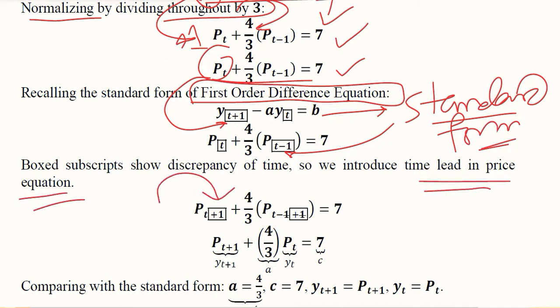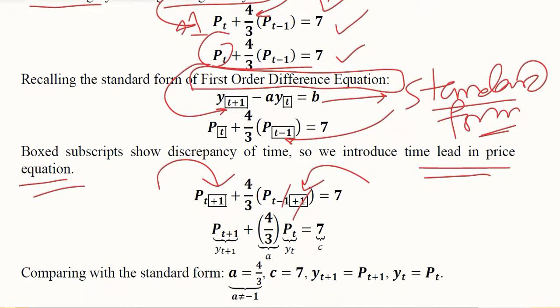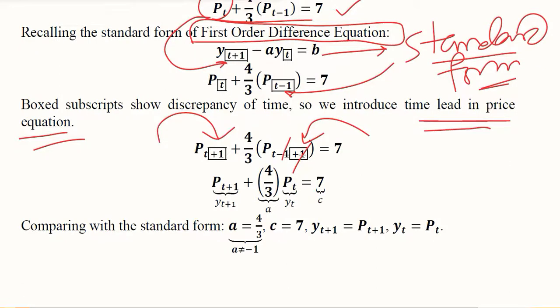We have introduced a lead in the price subscript. There you can see in the box it is done and this box can be solved. Here it will be cancelled out; here it will be introduced as t plus 1. So clearly now it is in that standard form where t plus 1 is in subscript of the first one, and in the subscript of the second variable it is t. Extracting the values is easy now.